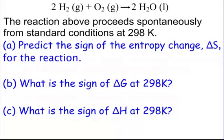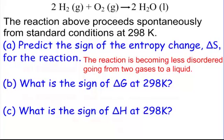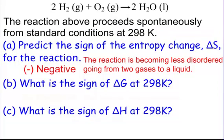And, of course, we're going towards less disorder. Because we're going from two gases, a lot of disorder, to a liquid. Something that's a little more ordered. And so our delta S is going to be negative here. It's going to be negative.